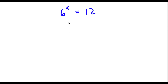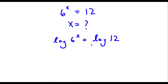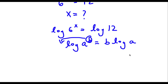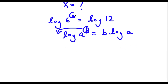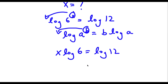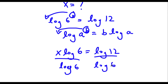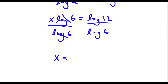Alright, so I have 6 to the power of x is equal to 12, and I want to find the value of x. The first thing I'm going to do is take the log on both sides. So now I have log 6 to the power of x is equal to log 12. Using the logarithm power property, I can move this exponent x to the front, so I'll have x times log 6 is equal to log 12. Now I'm going to divide by log 6 on both sides, so x is equal to log 12 over log 6.